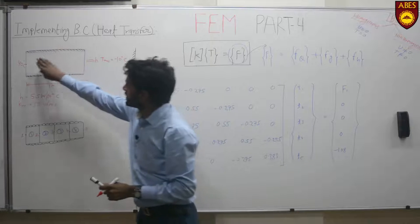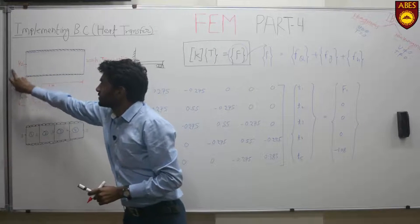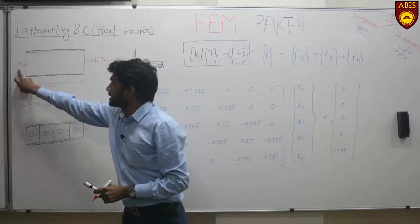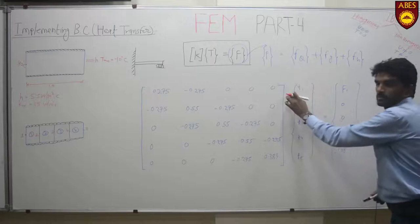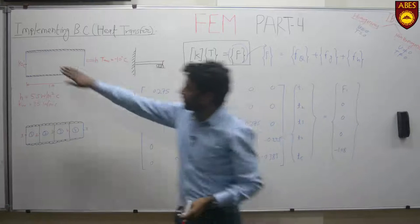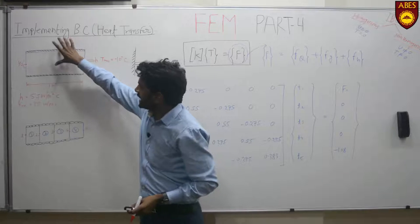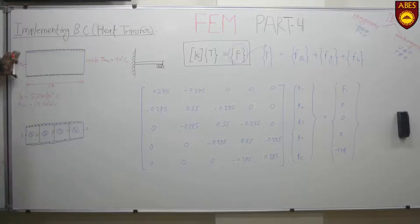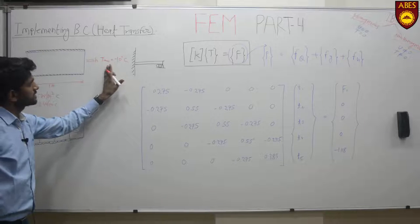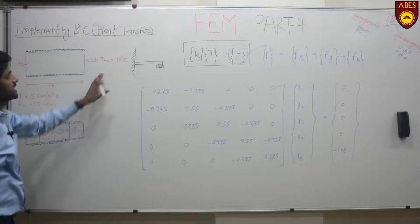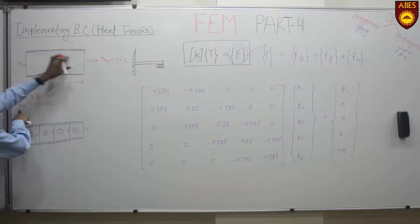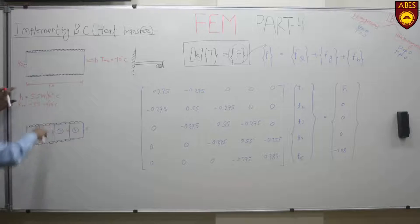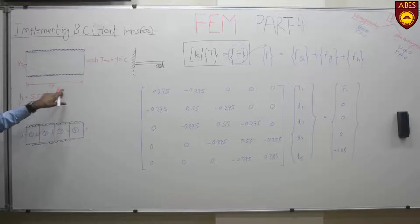In the similar way, while solving the heat transfer problem, at a particular point temperature would be given. We have taken a simple problem: an insulated pipe. The left side of the pipe is maintained at 40 degrees centigrade and the right side is open to the atmosphere, with atmospheric temperature of minus 10 degrees centigrade. The conductive heat transfer coefficient is 35 W/m·°C and the convective heat transfer coefficient is 55 W/m²·°C.